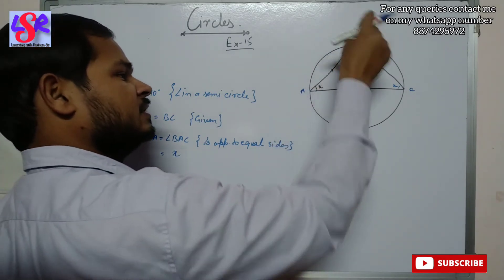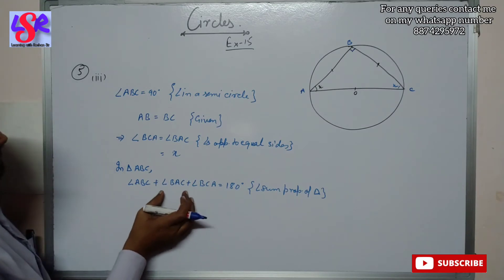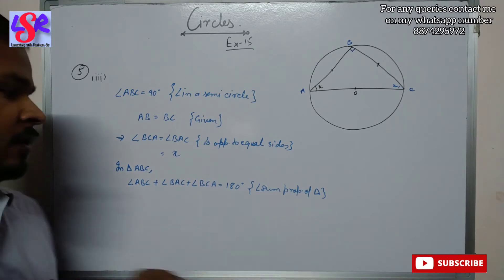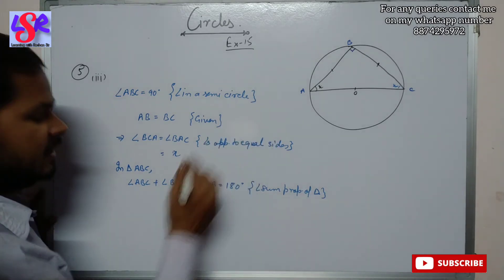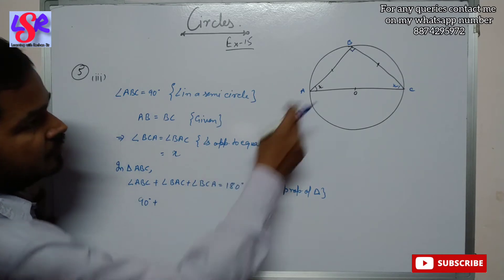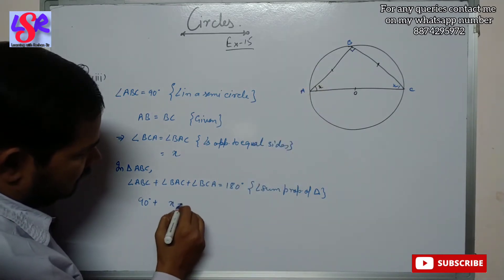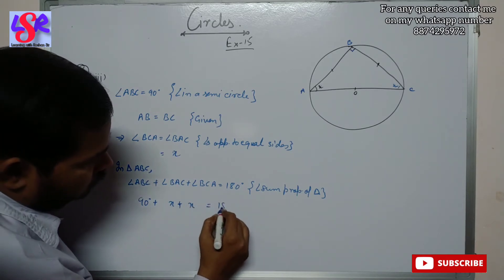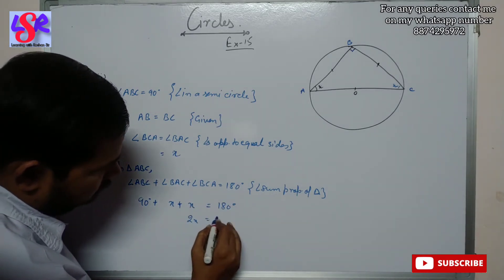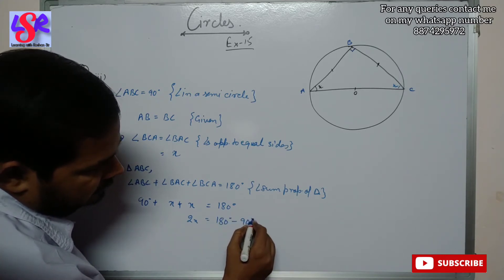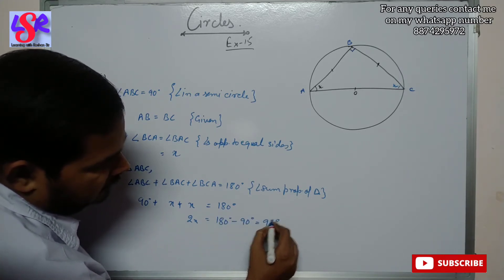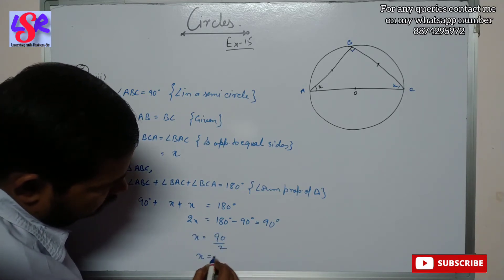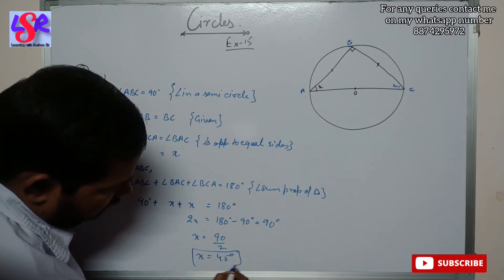In triangle ABC, angle ABC plus angle BAC plus angle BCA equals 180 degrees. Angle ABC is 90 degrees, angle BAC is X and angle BCA is also X. So 90 plus 2X equals 180, giving 2X equals 90, and therefore X equals 45 degrees.